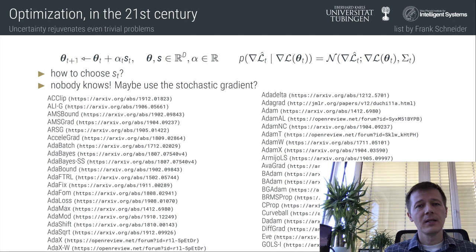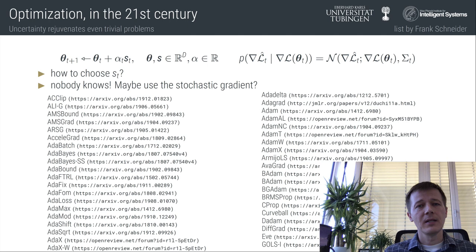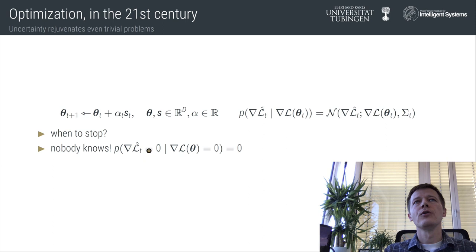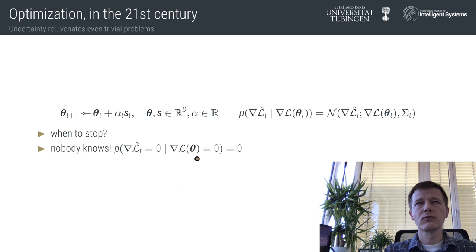To drive home the point: if you don't have access to noise-free gradients, you don't even know when you're done. Even if you reach a point where the true gradient is zero — the minimum — the stochastic estimators you keep collecting for your gradient will never be zero, almost surely. So if you run your optimizer in a stochastic setting, it will eventually go into diffusion around the true minimum, and you don't necessarily notice because you don't know what the noise is.